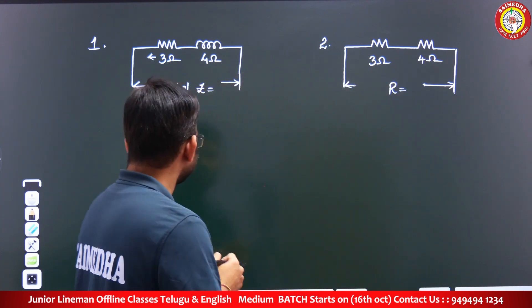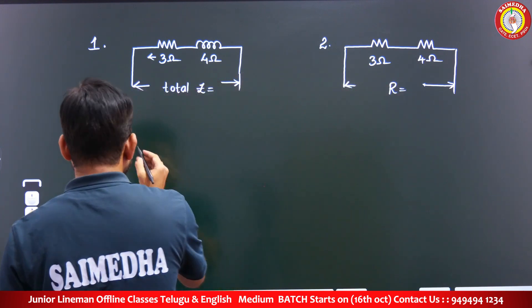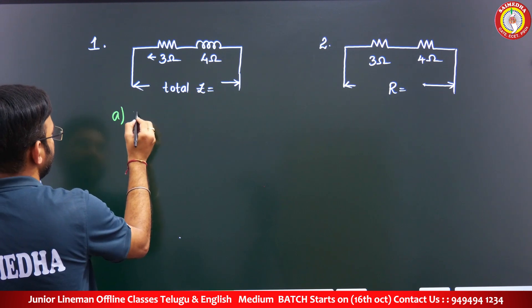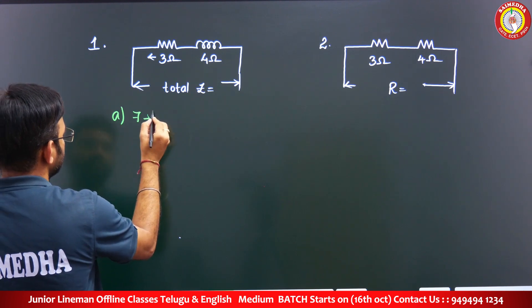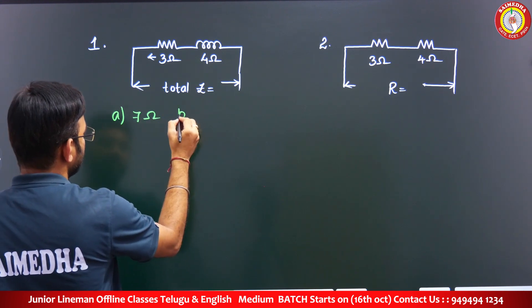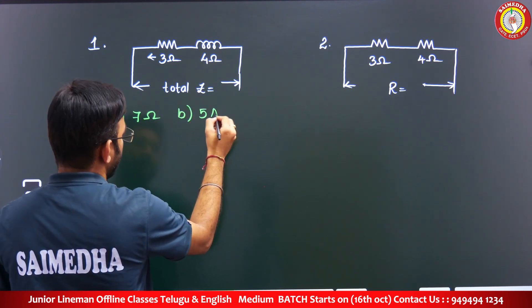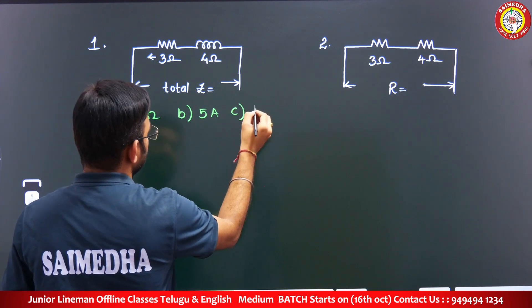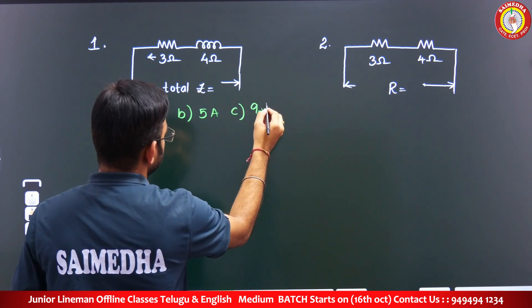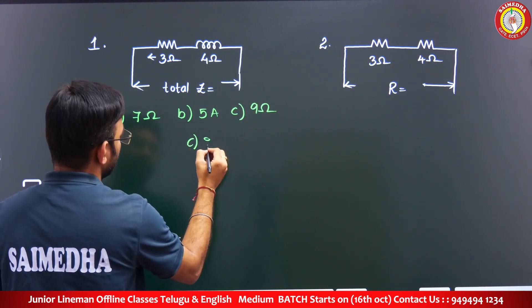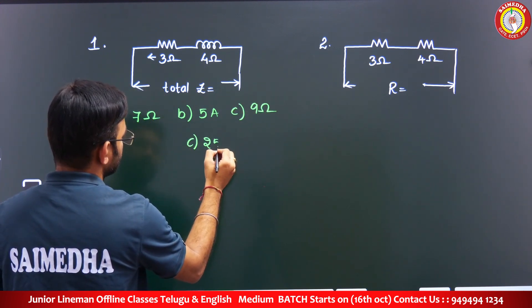Let's look at the options given. Option A: 7 ohms, Option B: 5 ohms, Option C: 9 ohms, Option D: 25 ohms.